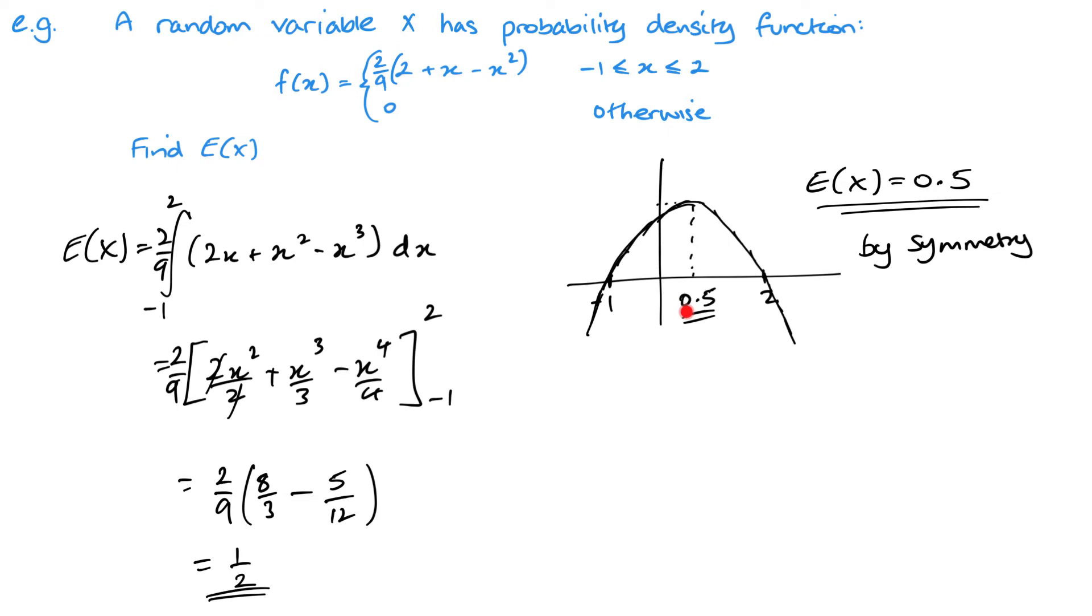If you were going to do this from a graph, from a sketch, and you state the value, put 'by symmetry' with it, so you're letting the examiner know that you know that the graph is symmetrical. Therefore that middle value here, which will give me my highest point, that middle value is going to be my mean.